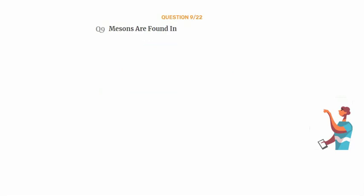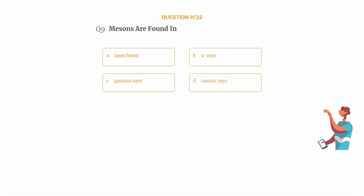Question number 9. Mesons are found in. Option A: Laser beam. Option B: X-rays. Option C: Gamma rays. Option D: Cosmic rays.